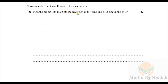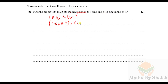Part b: two students are chosen at random. Find the probability that both play in the band and both sing in the choir. For each student, being in the band and singing has probability 0.6 × 0.3 = 0.18. For two independent students, the probability is 0.18 × 0.18 = 0.0324.